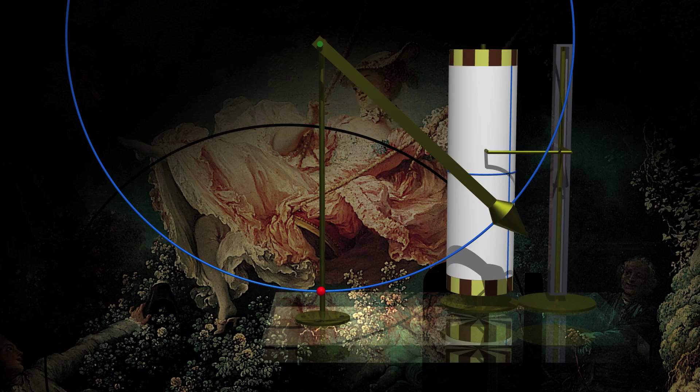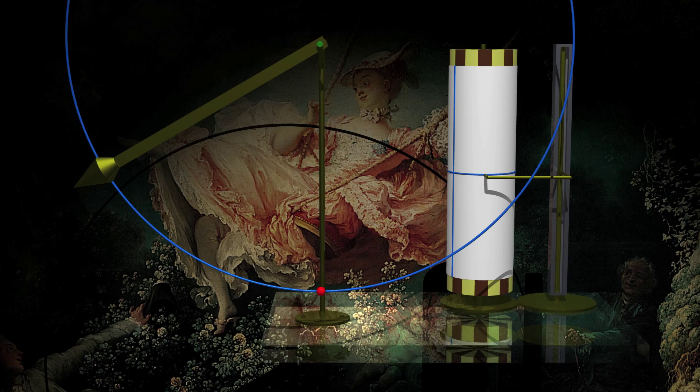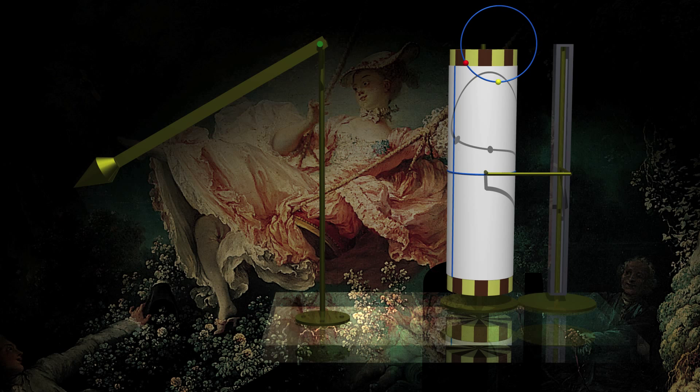The tip of the pendulum moves on the blue circle. Let's place this circle on the cylinder like so. Every point of the circle represents a position of the pendulum. The red point, for example, is the position at the bottom.